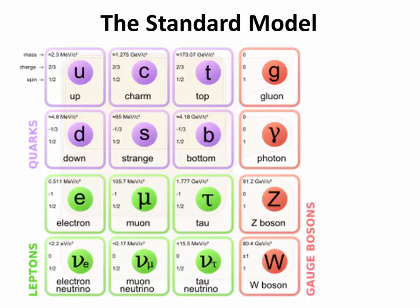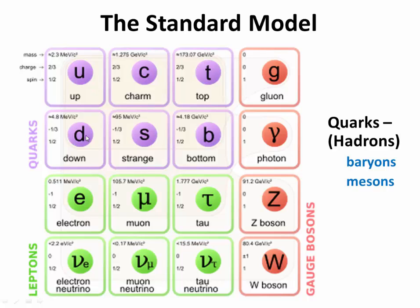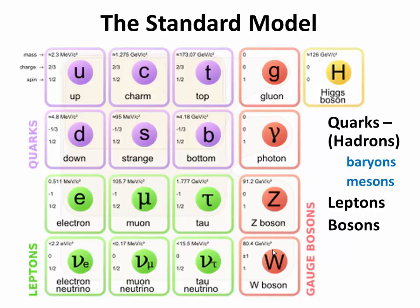Putting all this together, we have the Standard Model, which is made up of quarks, leptons, and gauge bosons. Quarks: we have six — up, down, charm, strange, top, bottom — and their anti-quarks. These always form hadrons, in other words baryons or mesons. Leptons are the light particles: the electron and electron neutrino, the muon and muon neutrino, and the tau and tau neutrino. Then the force carriers — the gauge bosons: the gluon for the strong force, the photon for the electromagnetic force, and the Z and W bosons for the weak force. The picture is almost complete with the Standard Model, and we have also discovered the Higgs boson, which completes the picture as we know it.